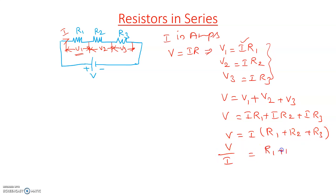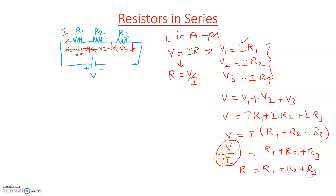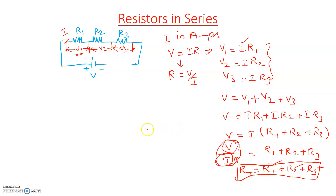So V divided by I equals R1 plus R2 plus R3. V by I is the total voltage divided by total current, which gives the total resistance or equivalent resistance. Therefore, the equivalent resistance or total resistance is equal to the sum of the individual resistances. In a series circuit, the equivalent resistance is the sum of all individual resistances. Current through each resistor will be the same, while voltage across each resistor will be different.